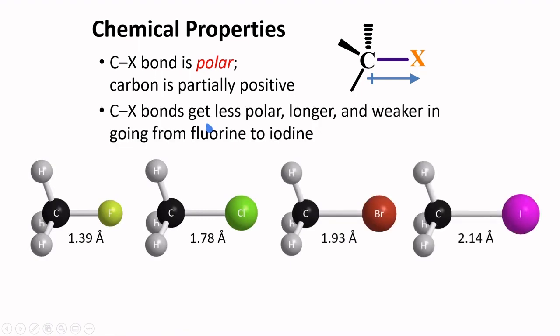The C-X bonds get less polar, longer, and weaker in going from fluorine to iodine.